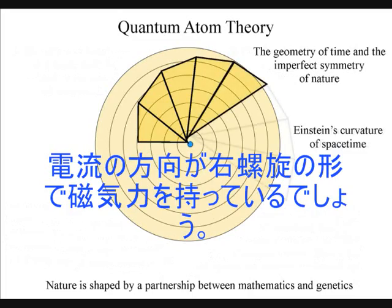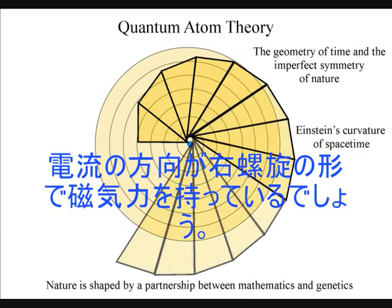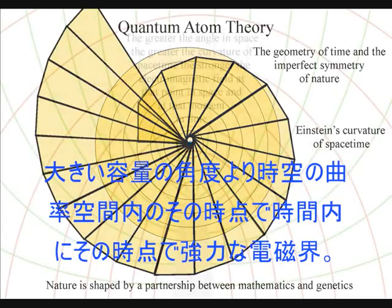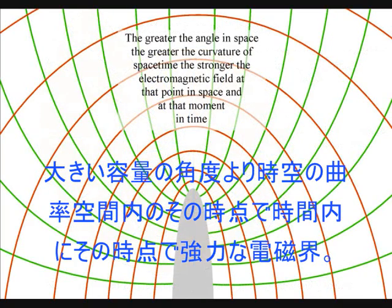The greater the angle in space, the greater the curvature of spacetime, the stronger the electromagnetic field, at that point in space, and at that moment in time.